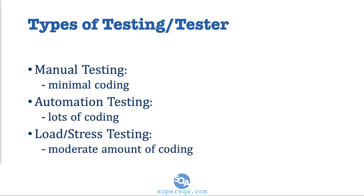Automation testing is lots of coding — it's almost all coding. You do everything that manual testing does; all the test cases and everything is the same. But you write code that would actually execute those tests. Instead of manually clicking here, manually opening that, manually typing this, you write scripts or code that actually do all of that. So that is automation testing.